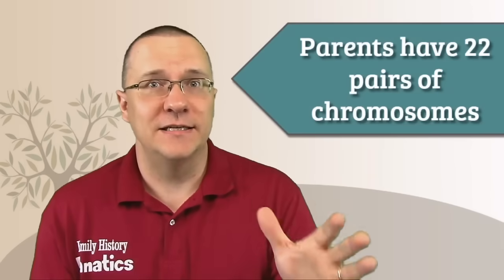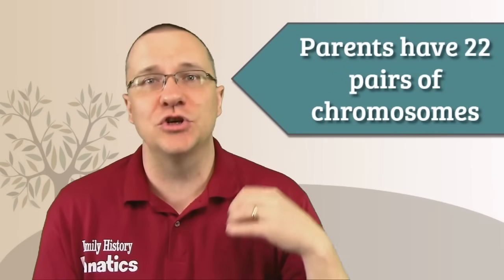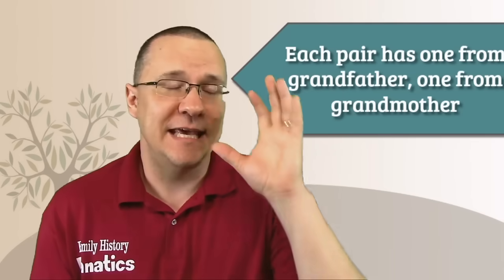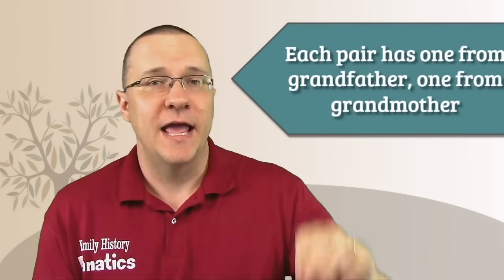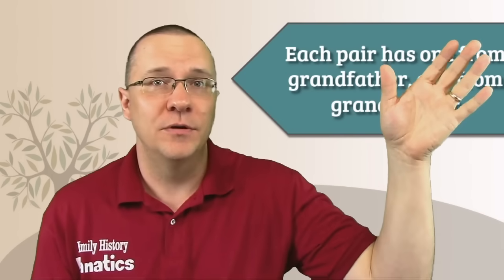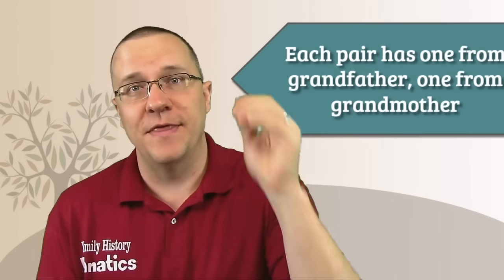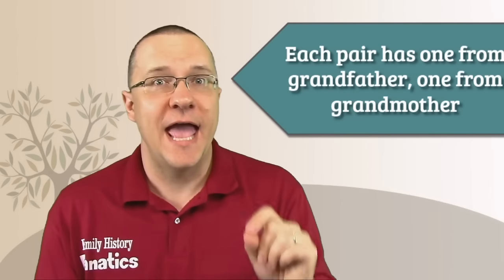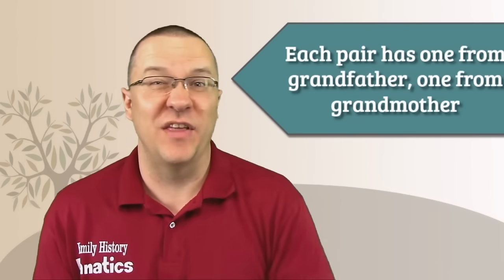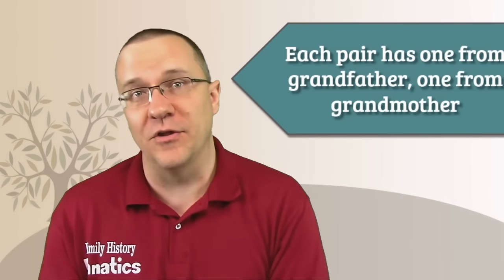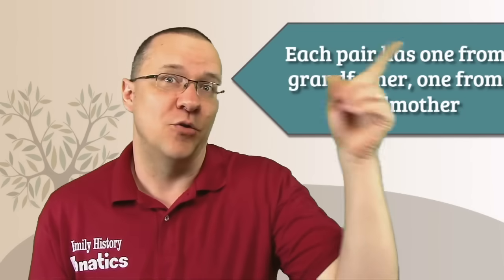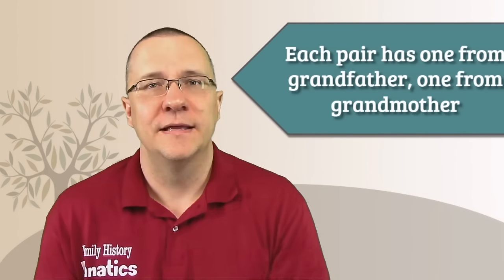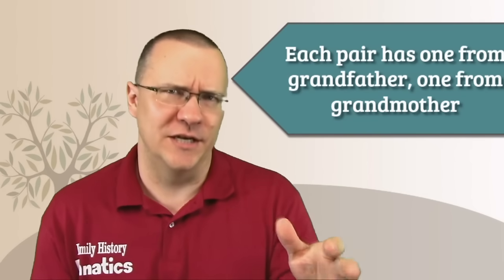Each one of our parents also has 22 pairs of chromosomes. And each of these pairs comes from either our grandfather, their father, or our grandmother, their mother. So in one pair, they have a grandfather chromosome and a grandmother chromosome. For us, it would be a grandfather chromosome and a grandmother chromosome that our parents have. This next part is really important to understand.